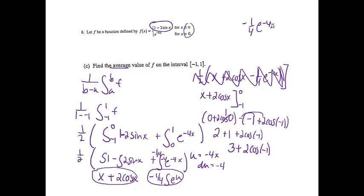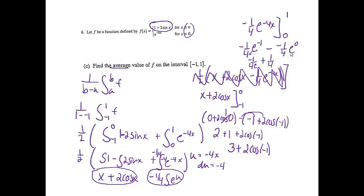Evaluating negative 1/4 e to the negative 4x from 0 to 1: plugging in 1 gives negative 1/4 e to the negative 1, minus negative 1/4 e to the 0. Moving e to the negative 1 to the denominator gives negative 1 over 4e, and minus the negative gives plus 1/4, since e to the 0 is 1.